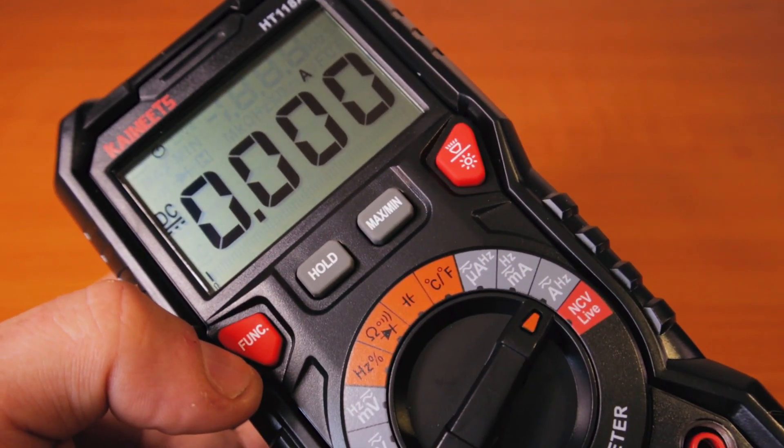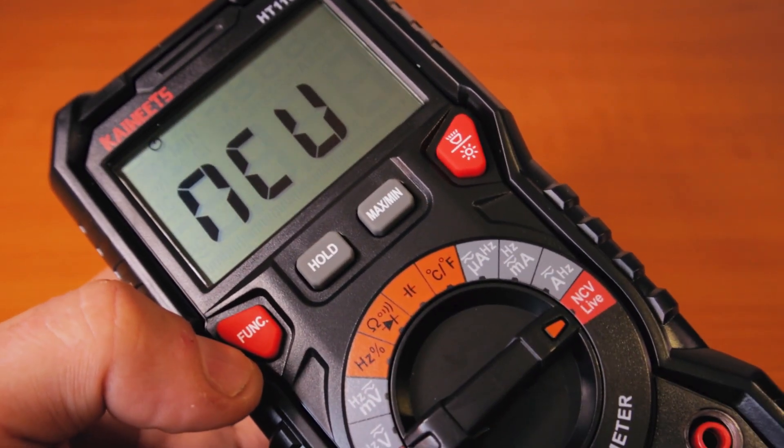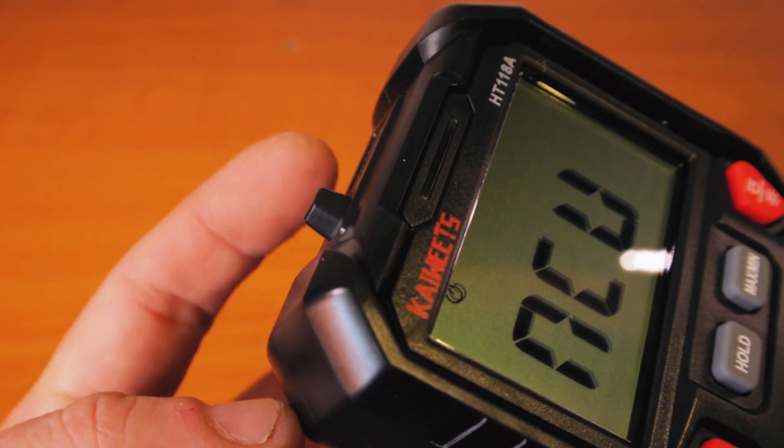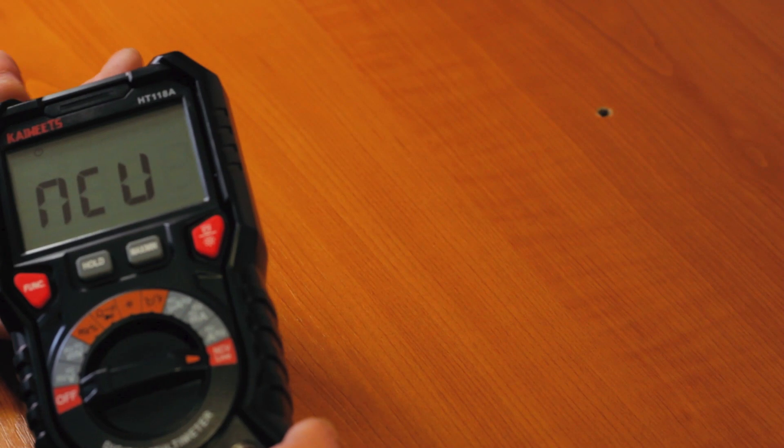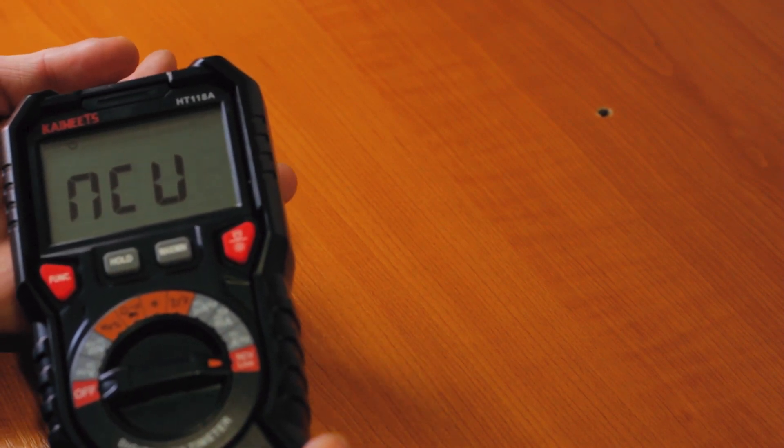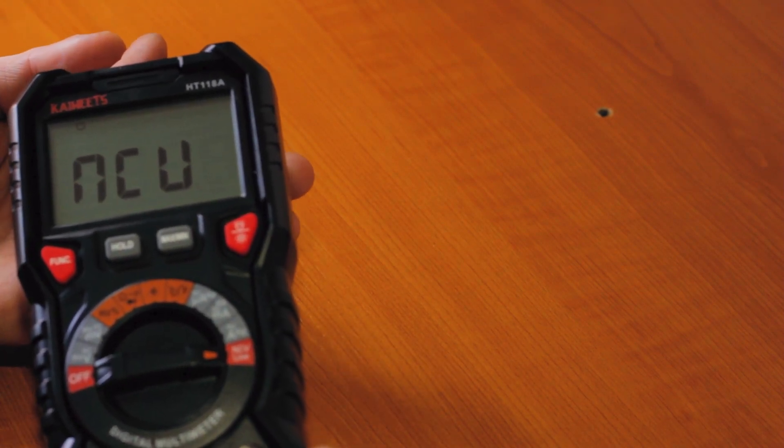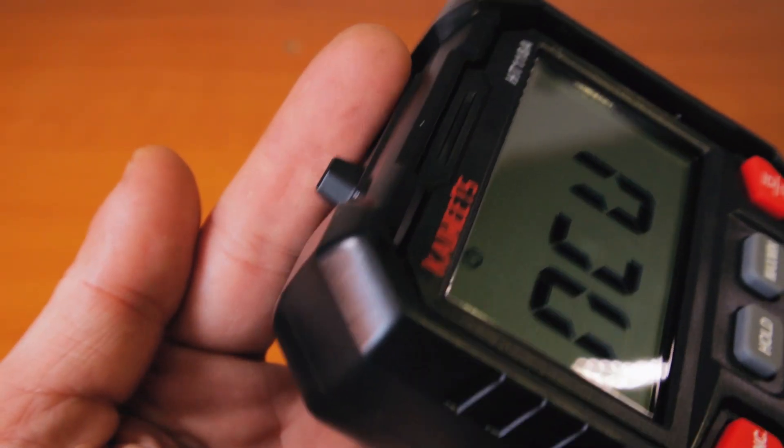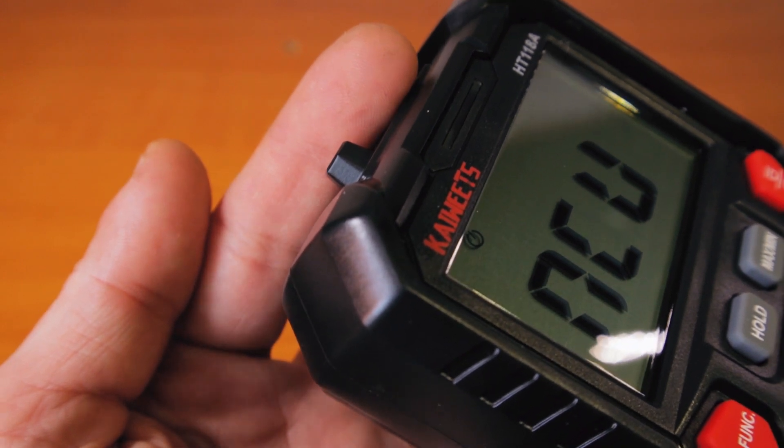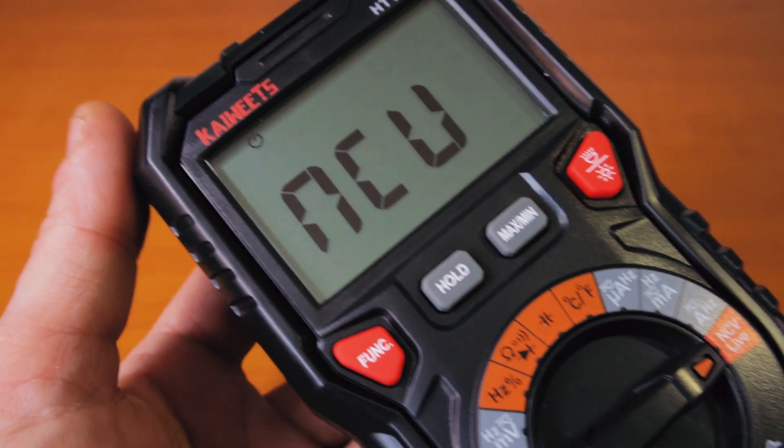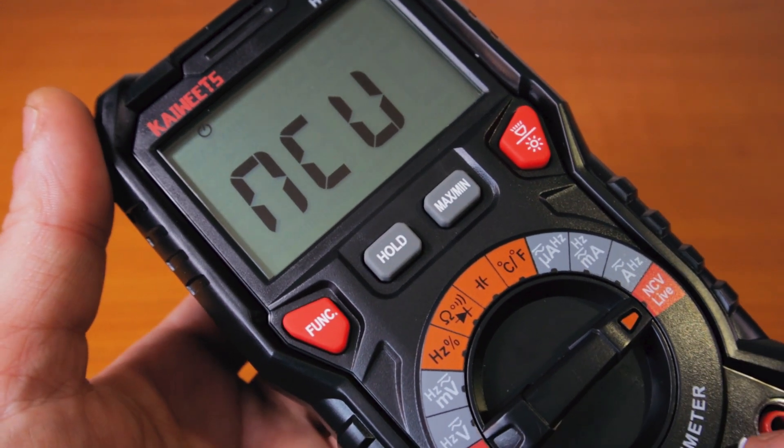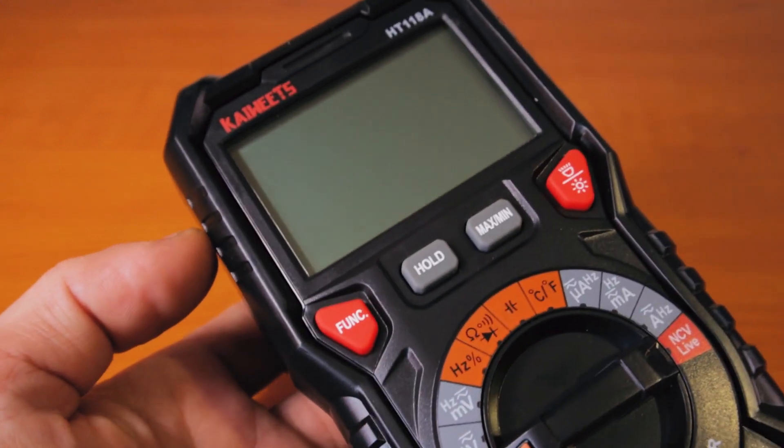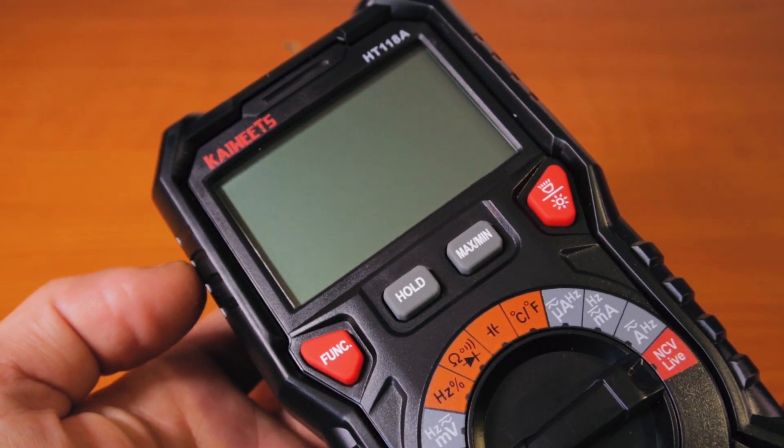And non-contact voltage, which is great because if you want to measure any voltage, you can—let's say my finger is a wire that runs electricity through—you're just going to put the sensor of the meter next to the wire and it's going to measure the voltage passing through. Great if you're working on electrical wiring.